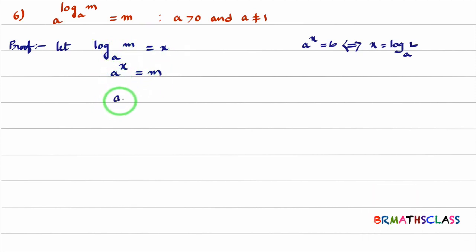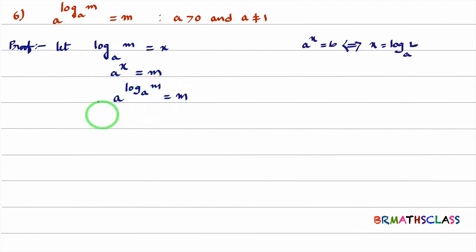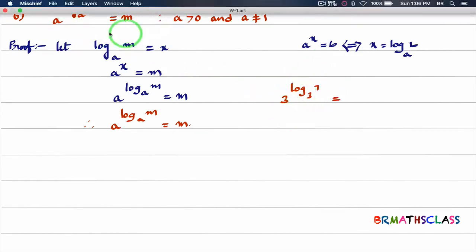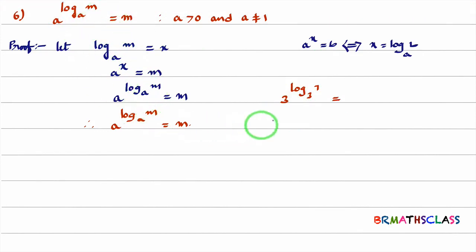Now, a^x — what is x? I considered log(m) base a as x, so in place of x I'll write log(m) base a, giving a^(log m base a) = m. We proved the result: a^(log m base a) = m. It is a very simple proof, but we use this property very frequently. For example, 3^(log 7 base 3) — by using this property, the answer is 7.